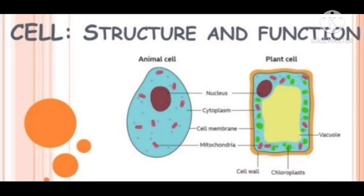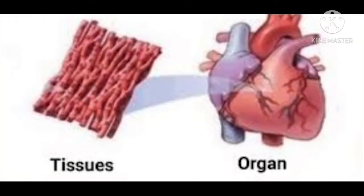Each living organism has many organs. The digestive organs together constitute the digestive system, each performing different functions such as digestion, assimilation and absorption. Similarly, different organs of a plant perform specific functions — roots help in absorption of water and minerals, and leaves are responsible for synthesis of food. Each organ is made up of smaller parts called tissues. A tissue is a group of similar cells performing a specific function. So an organ is made up of tissues, which in turn are made up of cells — the cell is the basic structural unit of a living organism.